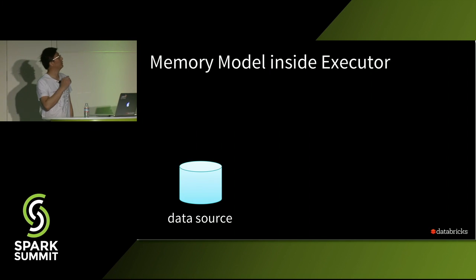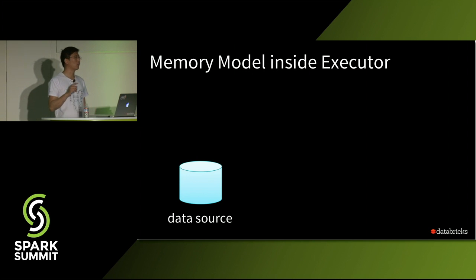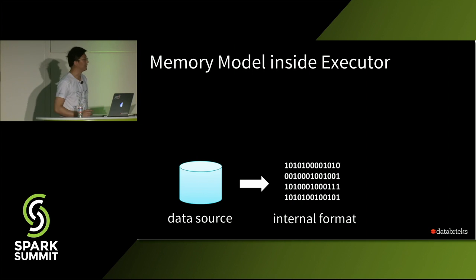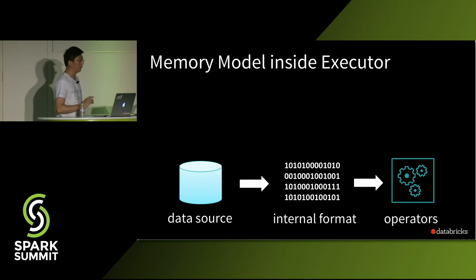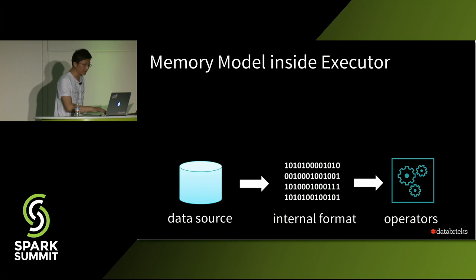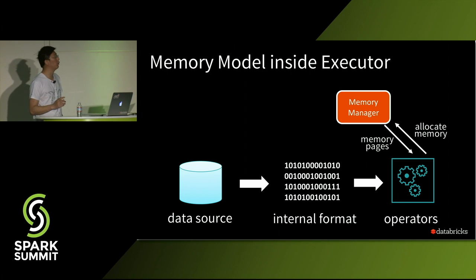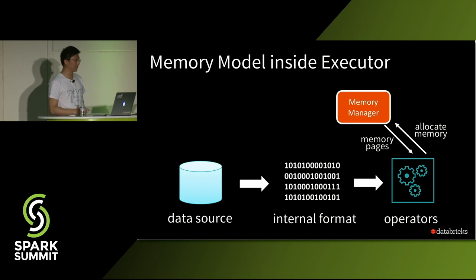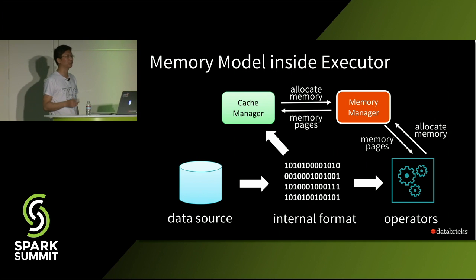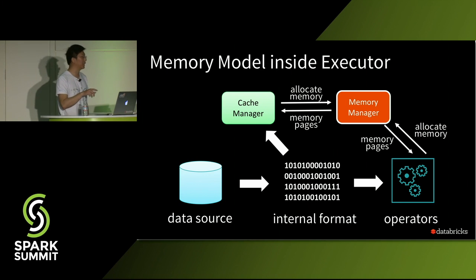Here is a quick overview of the memory model inside the executor. For a query, we first read records from our data source one by one into Spark's internal binary format. Spark then has operators that can operate on this internal format directly. Operators like sort, join, and aggregate have buffers and allocate memory from the memory manager. If a dataset will be reused later, we can cache it via the cache manager, which also allocates from the memory manager.